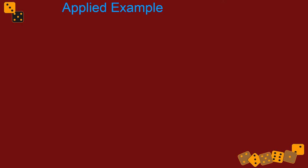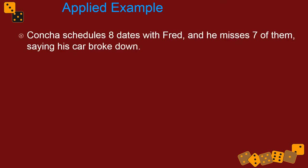So to do this, let's look at an applied example of how we might use probability distributions to help us answer a question, or at least give us some probabilities with certain assumptions for answers to a question. Let's say Concha schedules eight dates with Fred, and he misses seven of them. And each time he says, oh, my car broke down.